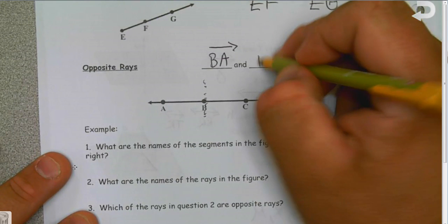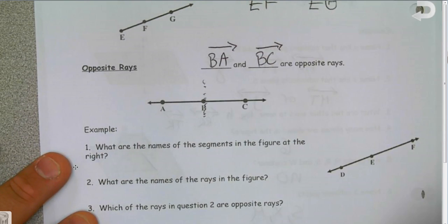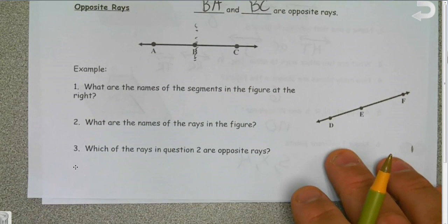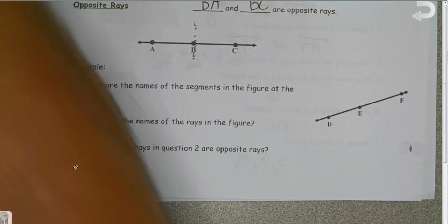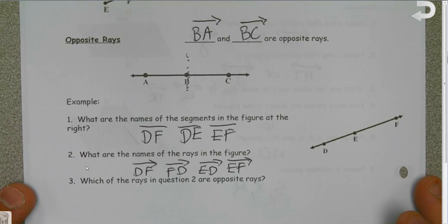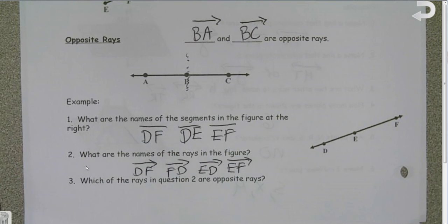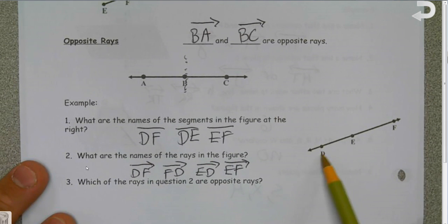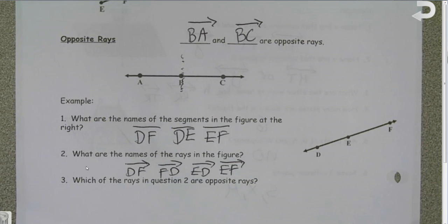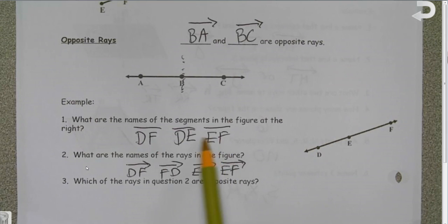At this point, I want you again to pause the video, look over the notes that we just took, and see if you can answer these three questions. Okay, so what are the names of the segments in the figure at the right? Well, there are three: DF, DE, and EF. I could have flipped them as well. It could have been FD, FE, and ED, and that would have been the same answer.